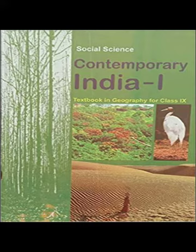The country has many non-flowering plants, such as ferns, algae and fungi. India also has approximately 90,000 species of animals, as well as a rich variety of fish in its fresh and marine waters. Natural vegetation refers to a plant community which has grown naturally without human aid and has been left undisturbed by humans for a long time. This is termed as virgin vegetation. Thus, cultivated crops and fruits, orchards form part of vegetation but not natural vegetation. The term flora is used to denote plants of a particular region or period. Similarly, the species of animals are referred to as fauna.